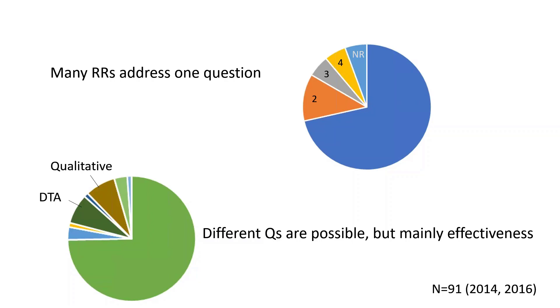Flexibility exists to address different types of questions when conducting a rapid review, but questions of intervention effectiveness are the most commonly undertaken.